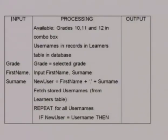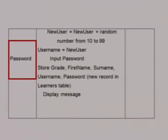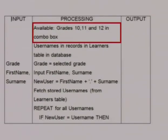Now the rest is easy. Read each of the steps in the processing column carefully, see what data is needed, and decide whether it must be input by the user or whether it must be available to the event. Now fill in the input column. Firstly, we input the grade — selected grade means we store the selected grade in a variable named grade. We must also store the first name, surname, and the password. Then add the available data items — the grades must be available for the user to select from. Mention the GUI component, the combo box, so it is clear where the data will come from.